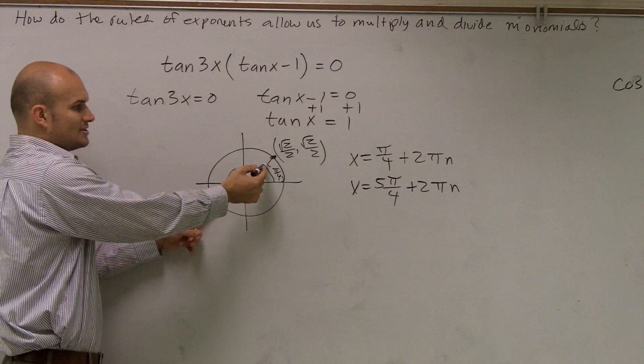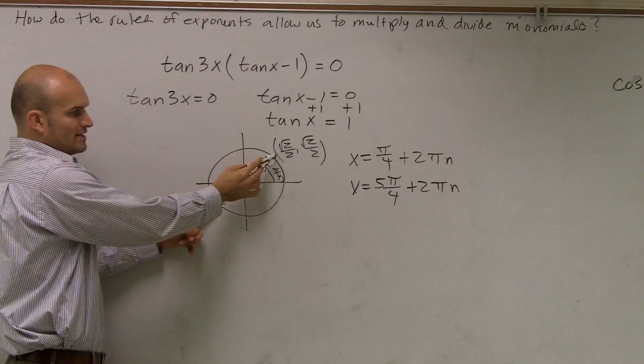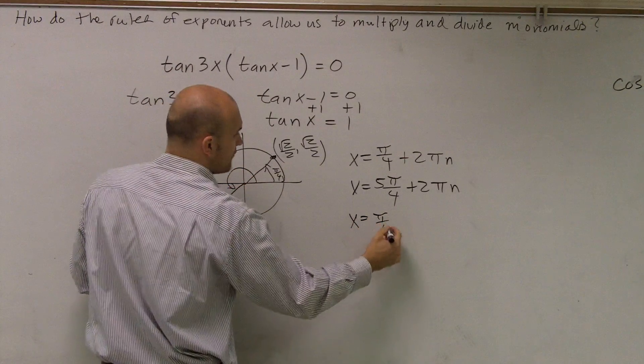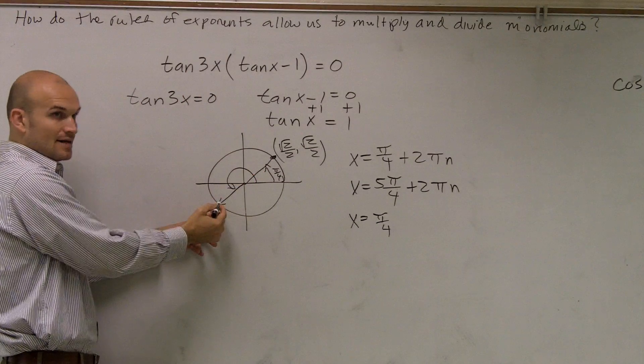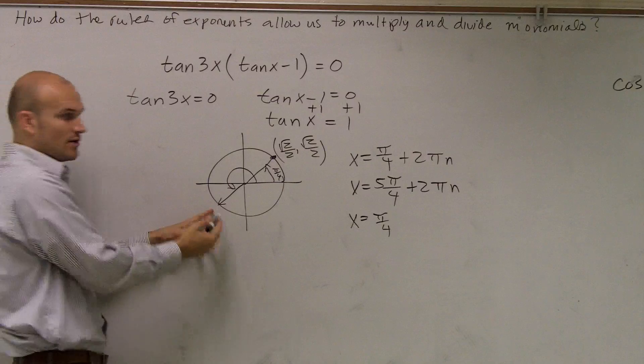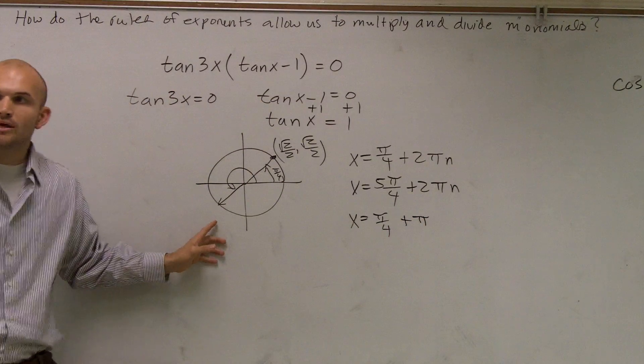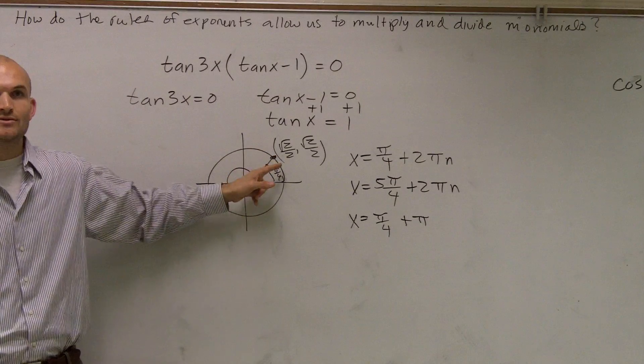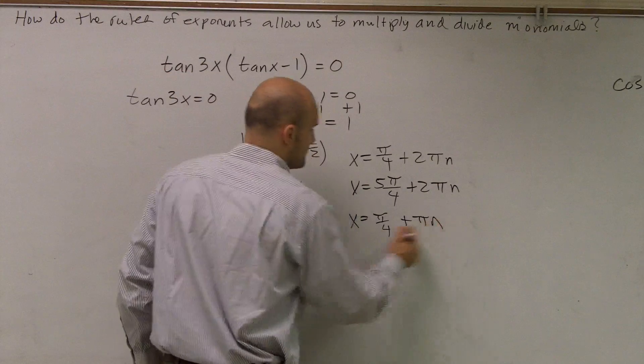So rather than writing both angles, if I go from π over 4, if I just say x equals π over 4, and then all I have to do is add π, I get to my next point, which is a solution as well, right? So really what I can do is just say, it's π over 4 plus π, and then if I add π again, I get back to my next solution, add π again, next solution, so that is just really going to be πn.